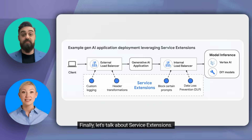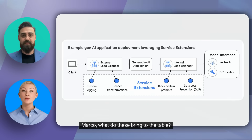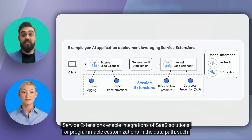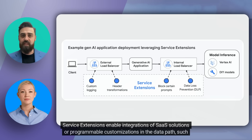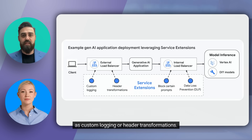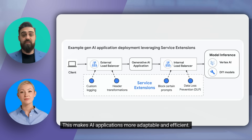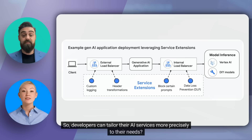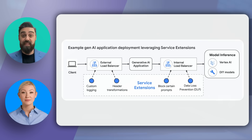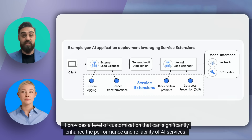Finally, let's talk about service extensions. Service extensions enable integration of SaaS solutions or programmable customizations in the data path, such as custom logging or header transformations. This makes AI applications more adaptable and efficient. Developers can tailor their AI services more precisely to their needs, providing a level of customization that can significantly enhance the performance and reliability of AI services.